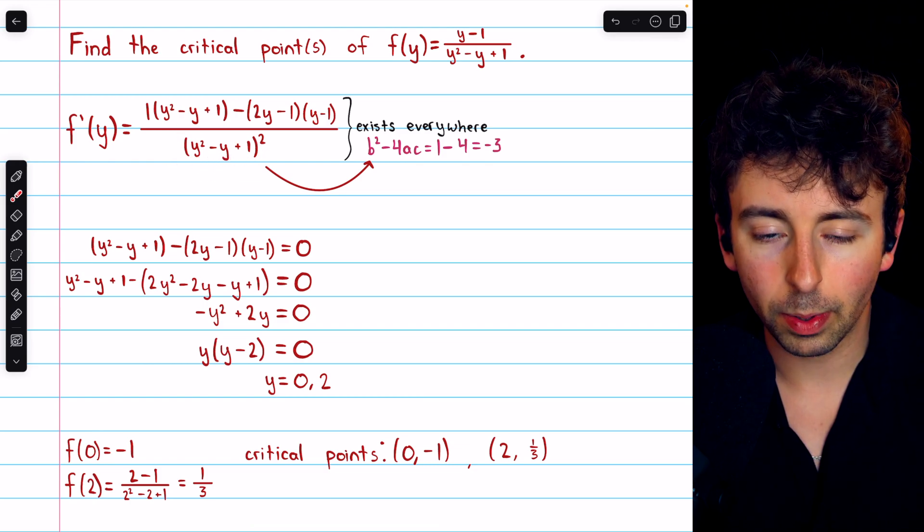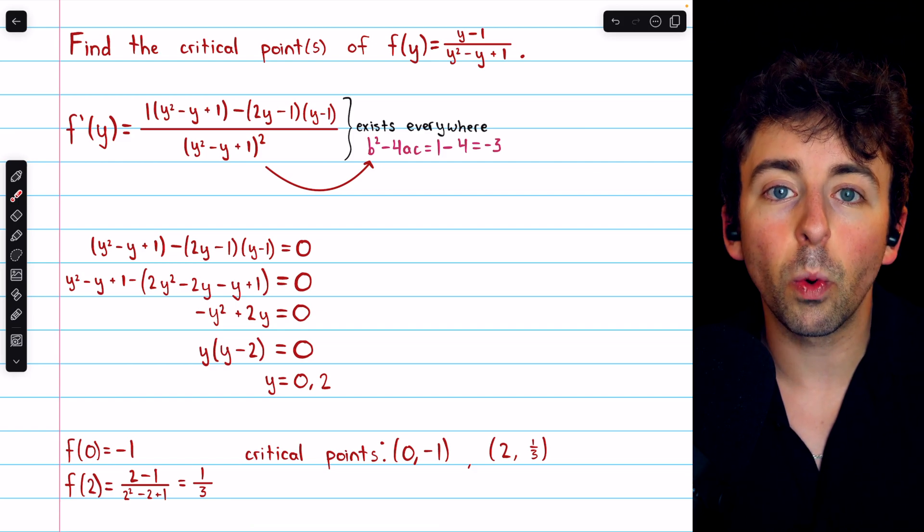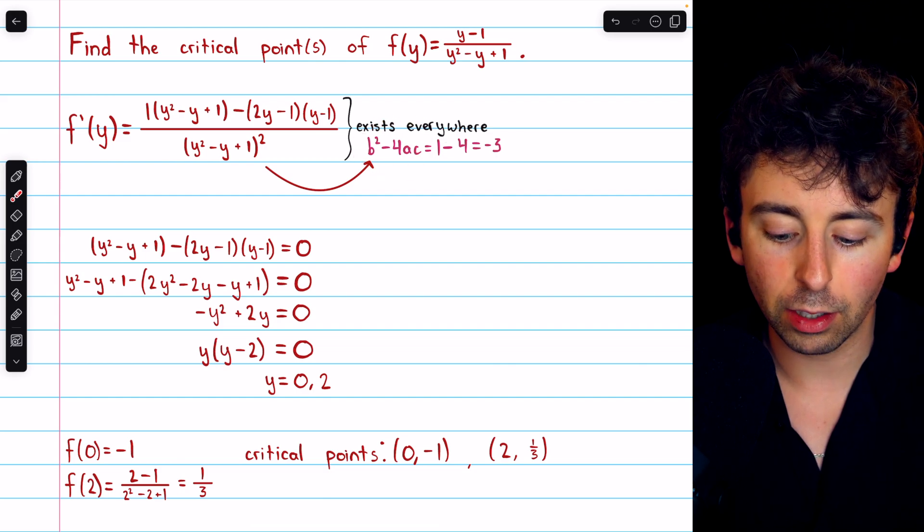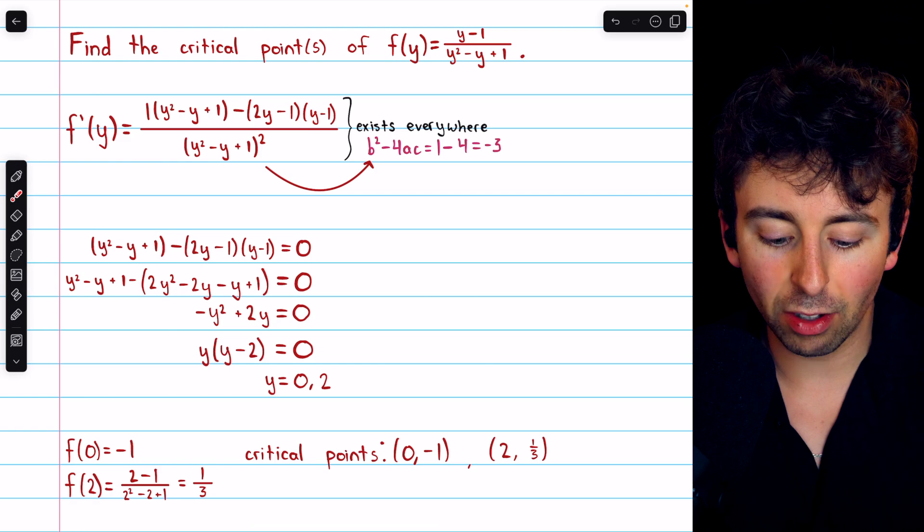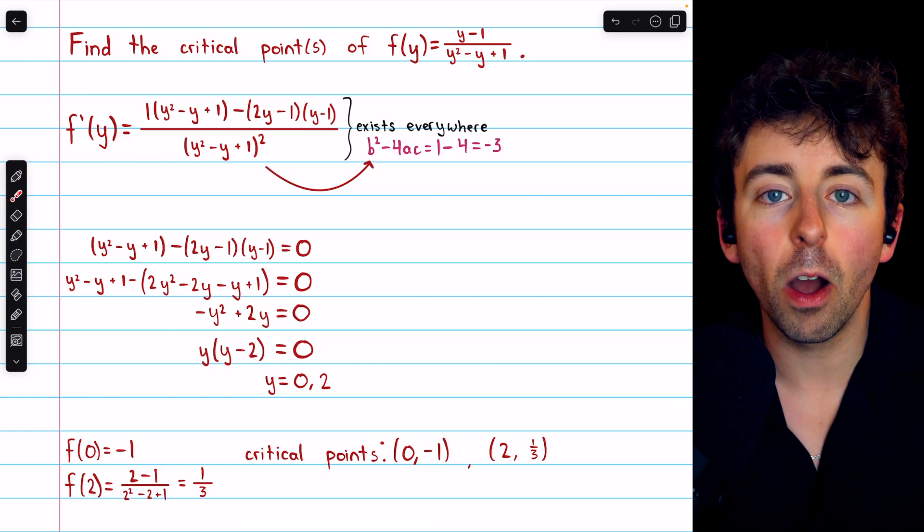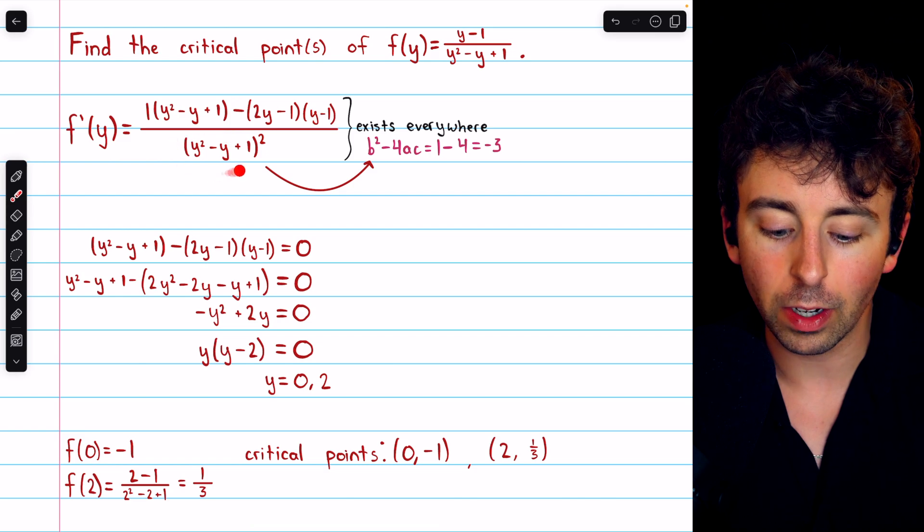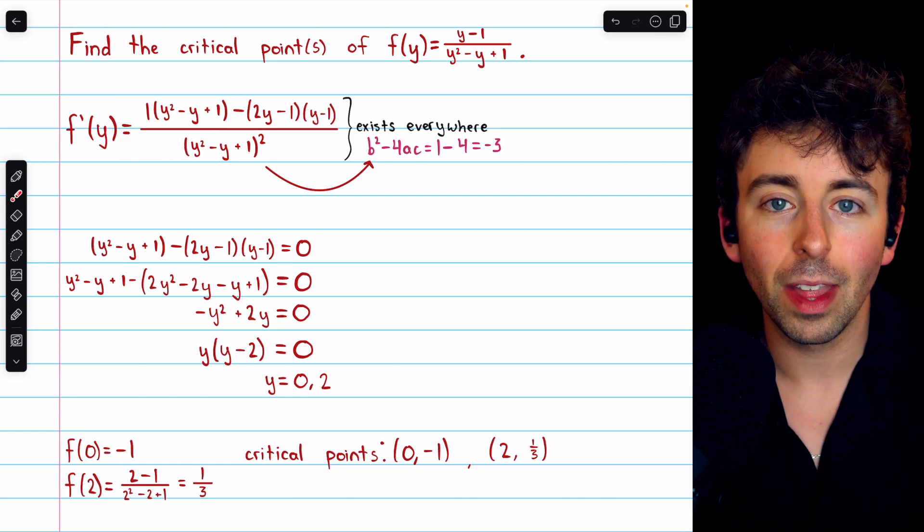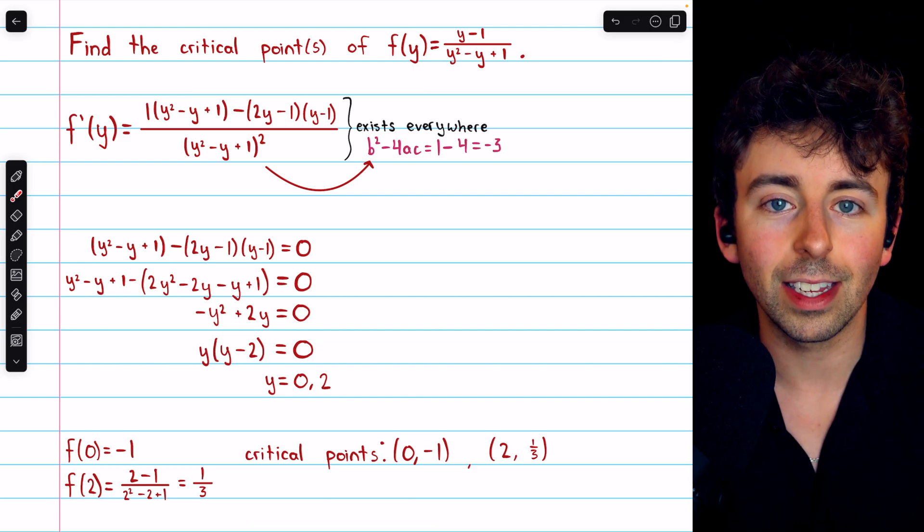But y² - y + 1 is a quadratic, and its discriminant is b² - 4ac, which is a negative number, which means that this quadratic actually has no real roots. Hence, there's no y value that's actually going to make this 0. So the derivative is defined everywhere. Thus, the only critical points would occur where the derivative is equal to 0.